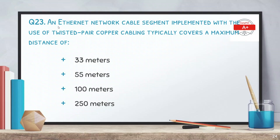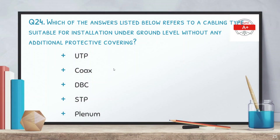Question 23: an Ethernet network cable segment implemented with twisted pair copper cabling typically covers a maximum distance of — options are 33 meters, 55 meters, 100 meters, and 250 meters. The correct answer is 100 meters, as we also studied in previous questions.